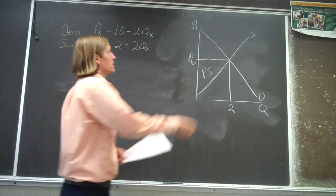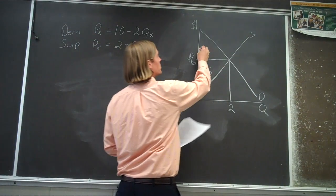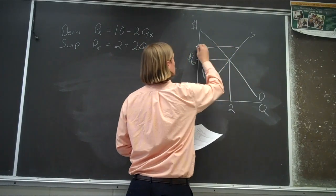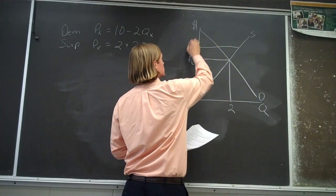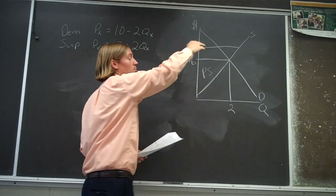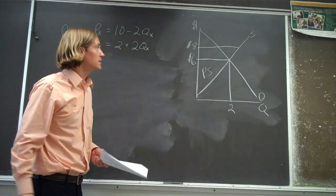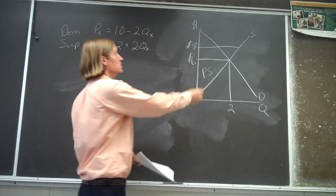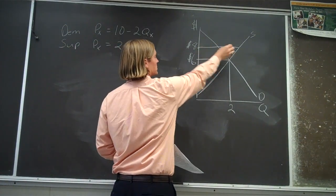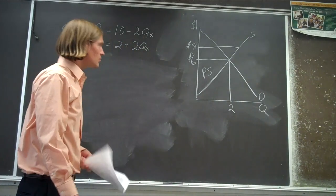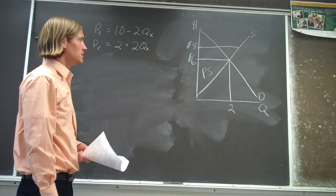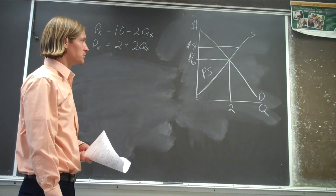But what if the government came in and put in a price floor of eight dollars? That says the price can't go below eight dollars, so we have this new selling price of eight bucks. How is that going to impact the producer surplus?